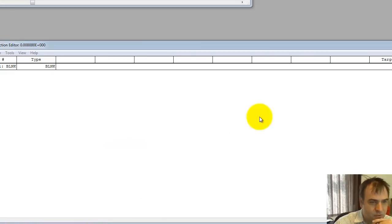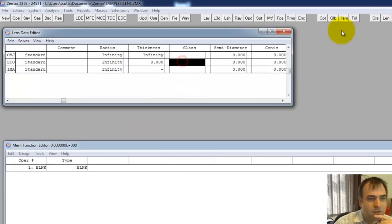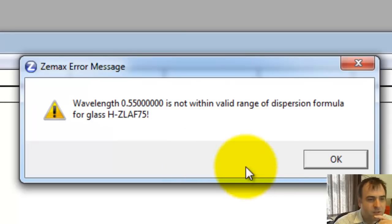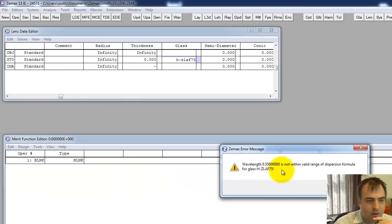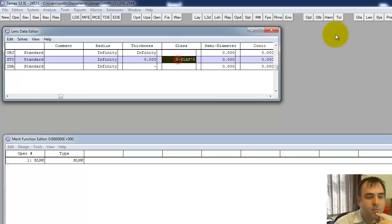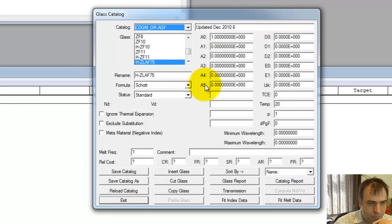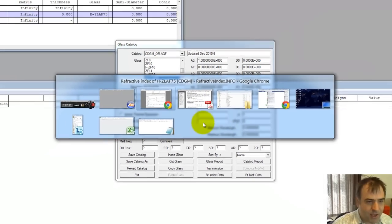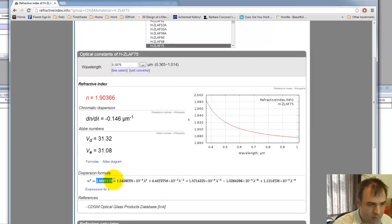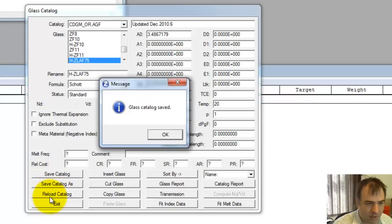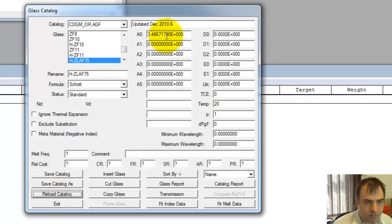Now let's go back to this web page. You can see it's the same, the Schott formulation: n squared versus lambda squared, bias term, out to 1 over lambda to the eighth. We've got our coefficients. Let's go to ZMAX and I'll show you how to quickly enter that. Let's go back to our glass catalog. I'm going to enter H-ZLAF75 in the cdgm.opticsROM catalog. We're getting an error message, we'll talk about that later.